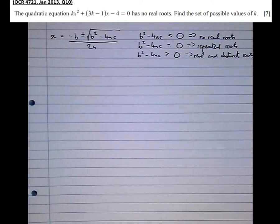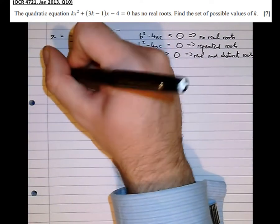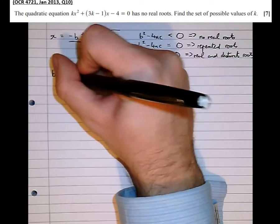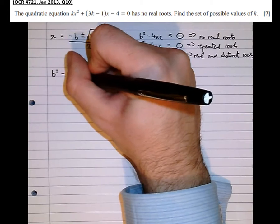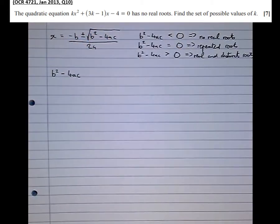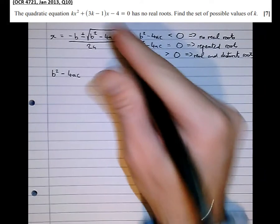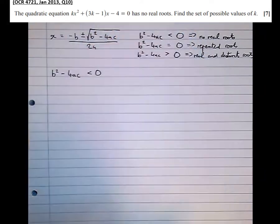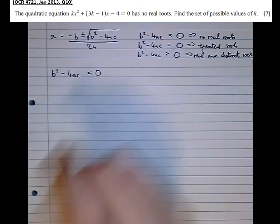So now that we've got that out of the way let's have a look at the question. It tells us the quadratic equation kx squared plus 3k minus 1x minus 4 equals zero has no real roots. So at that point I'm going to stop reading. As soon as it talks about the number of roots that an equation has I know that it's a question about the discriminant. So b squared minus 4ac in this case for no real roots is less than zero. Find the set of possible values of k.